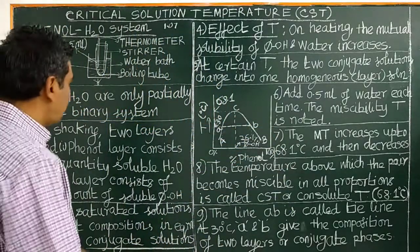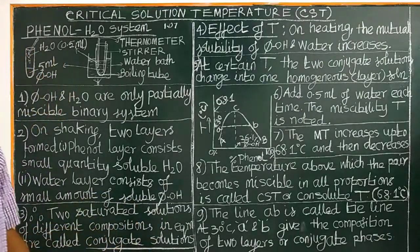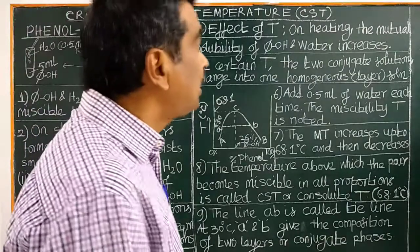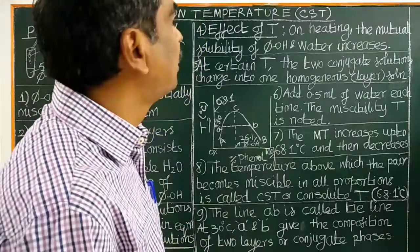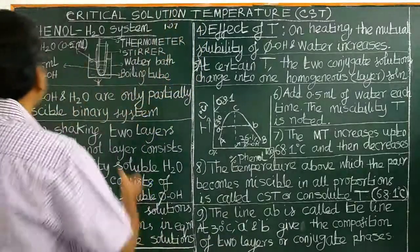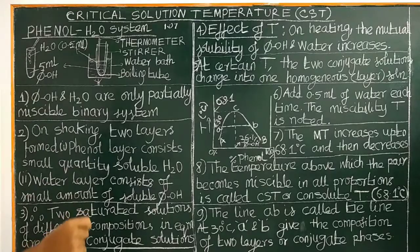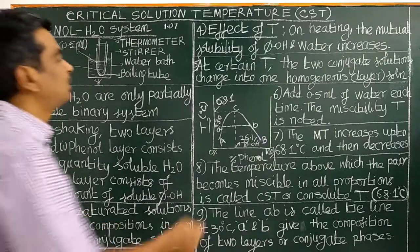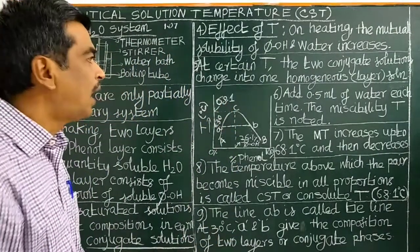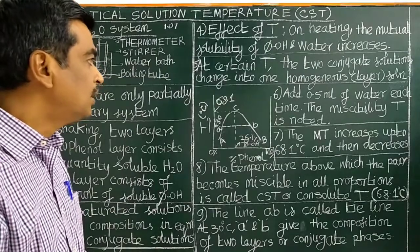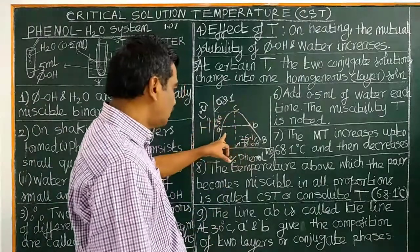We will see in the next class the effect of impurities on critical solution temperature. If impurities are added and the impurity is soluble in water, then the CST — critical solution temperature — changes. We will also describe this curve further.